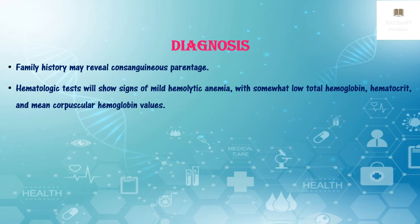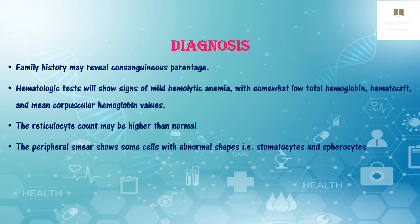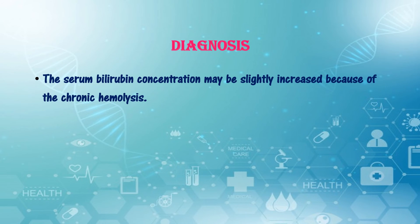Hematologic tests will show signs of mild hemolytic anemia with somewhat low total hemoglobin count, hematocrit value, and mean corpuscular hemoglobin values. The reticulocyte count may be higher than normal. The peripheral smear shows cells with abnormal shapes — stomatocytes and spherocytes. Osmotic fragility of red cells is examined by exposing them to various sodium chloride concentrations and following the degree of hemolysis. Serum bilirubin concentration may be slightly increased because of chronic hemolysis, as breakdown of heme produces bilirubin as its end product.